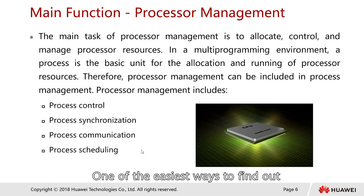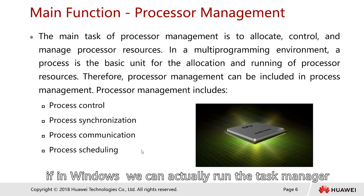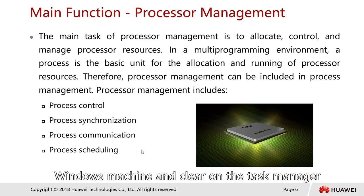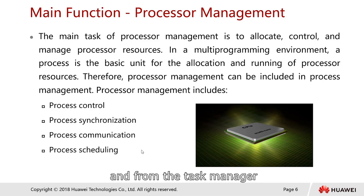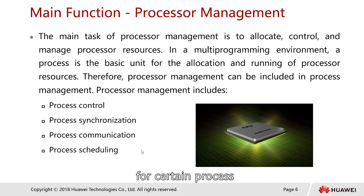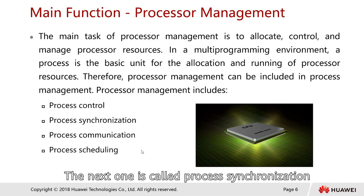One of the easiest ways to see process utilization is in Windows — you can run the Task Manager by pressing Ctrl+Delete on a Windows machine and clicking on Task Manager. From there, we can find out how much process resources have been allocated for certain processes, as different programs use different utilization of resources.